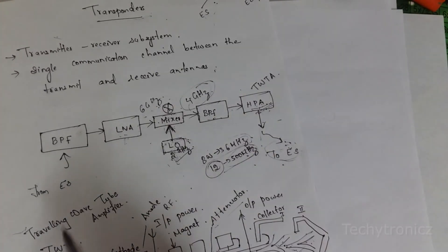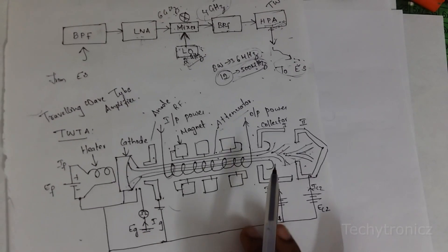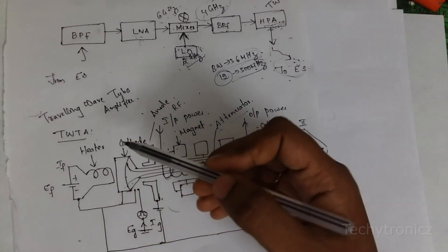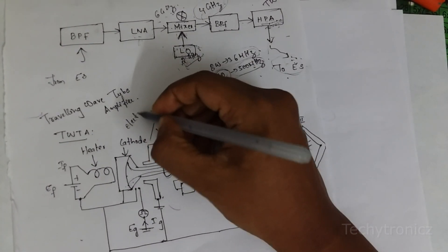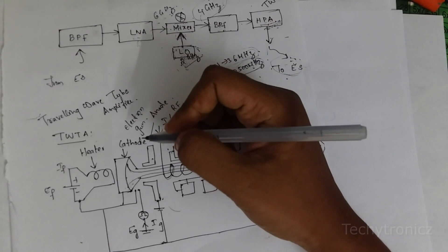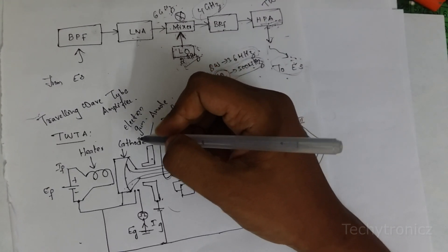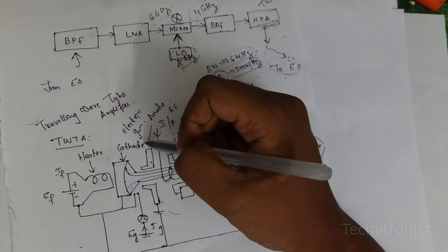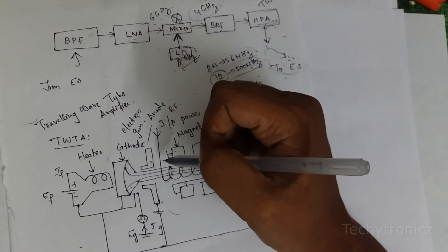In the high power amplifier, they are using a traveling wave tube amplifier. This is the diagram for the traveling wave tube amplifier. Here we have the cathode connected to the electron gun. In TWT — that is, the traveling wave tube amplifier — an electron beam gun assembly consists of a heater, a cathode, and focusing electrodes which are used to form an electron beam.